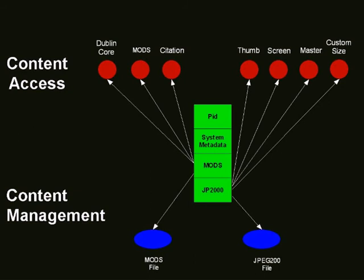When someone asks for the MODS, you just give it to them. When someone asks for Dublin Core, it's a transformation — you apply an XSL stylesheet to the MODS file to derive it on demand. For citation, an application like Zotero can create a citation from extracted MODS data. On the image side, the JPEG 2000 can be used to derive all different sizes of images: thumbnail, screen size, master size. Thumbnail and screen size are transformations; the master may just give back the JPEG 2000. You can also have a custom size where you pass in parameters — like a pixel box — and the service object transforms the JPEG 2000 to user specifications.